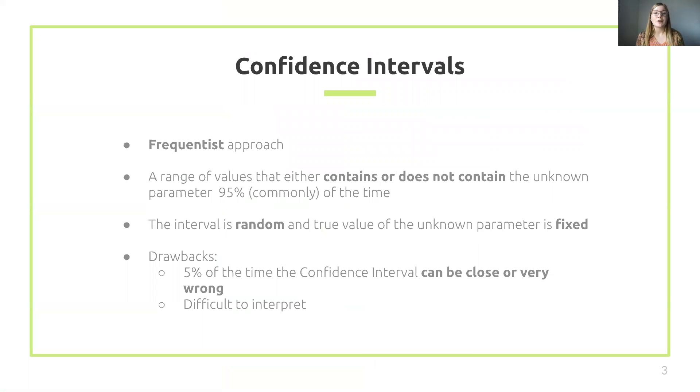Confidence intervals are the frequentist approach to attempting to provide a deeper understanding about the unknown parameter we are estimating. A confidence interval is a range of values that either contains or does not contain an unknown parameter some predetermined percentage of the time, commonly 95%. If the experiment were conducted 100 times, we would expect the true unknown parameter to lie within each confidence interval 95 times. In the case of confidence intervals, the interval is stochastic, and the true value of the unknown parameter is fixed.